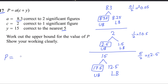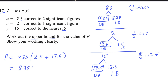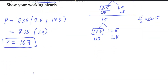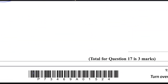So P equals A times (C plus Y). We substitute the upper bound values: A equals 8.35, C equals 2.5, and Y equals 17.5. So P equals 8.35 times (2.5 plus 17.5), which is 8.35 times 20. The answer is 167. So the upper bound for P is 167. This is the answer for question number 17.